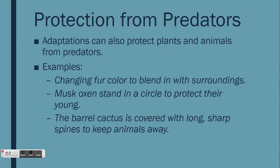Another purpose of adaptations is to protect animals from predators. An example of this is when an animal's fur changes color in order to blend in with their surroundings. This structural adaptation helps them camouflage from predators. In the tundra biome, adult musk oxen don't have many predators. However, their young are much smaller and need protection. A behavioral adaptation that adult oxen have is that they stand in a circle around their young in order to protect them from predators.